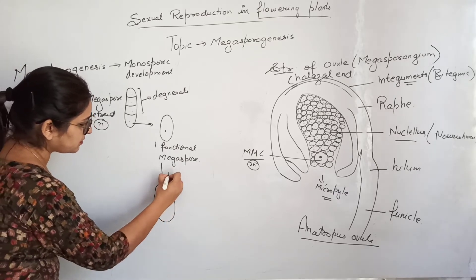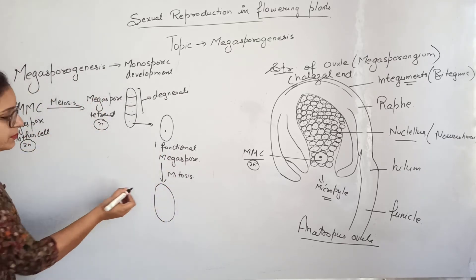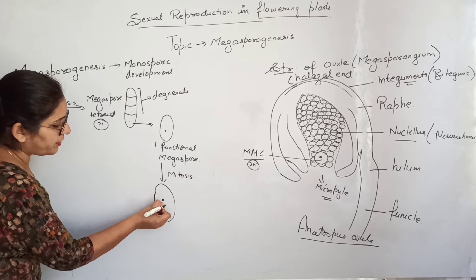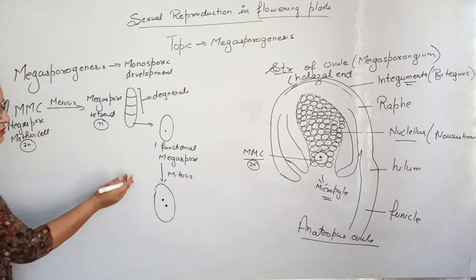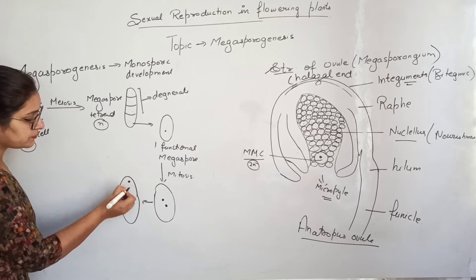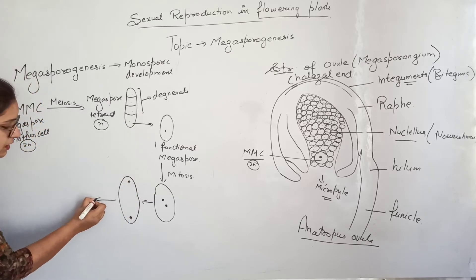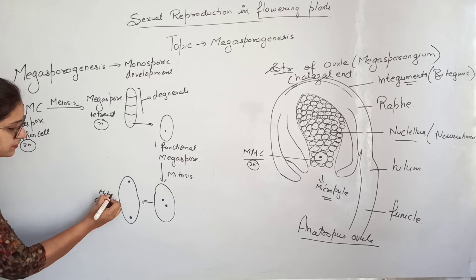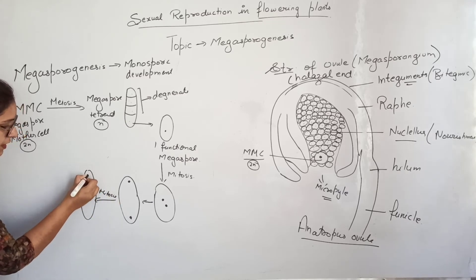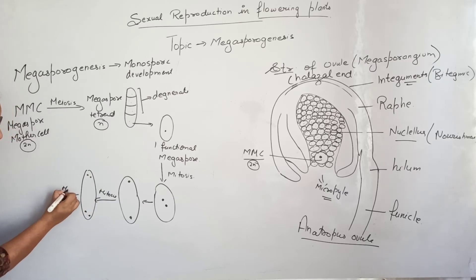The functional megaspore later undergoes mitosis. This is a free nuclear division, forming two haploid nuclei that move toward opposite poles, and then undergo mitosis again, forming four nuclei.